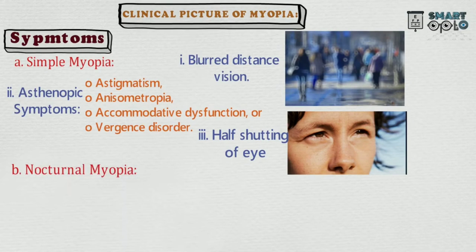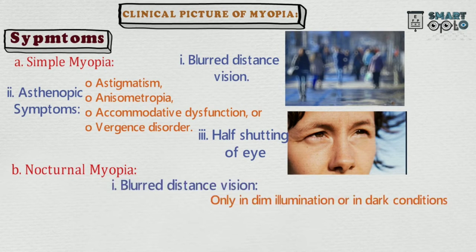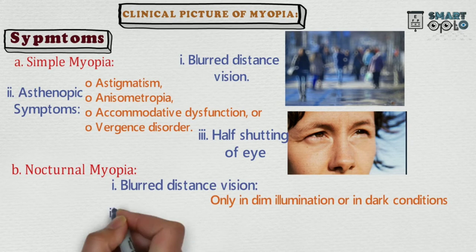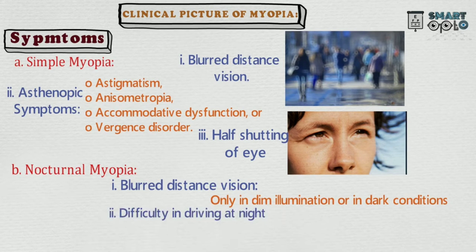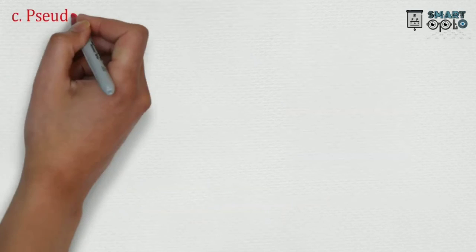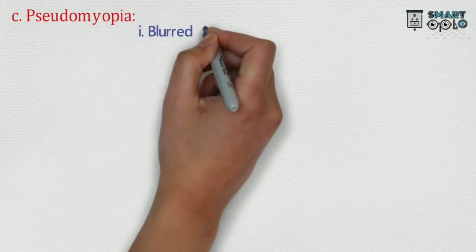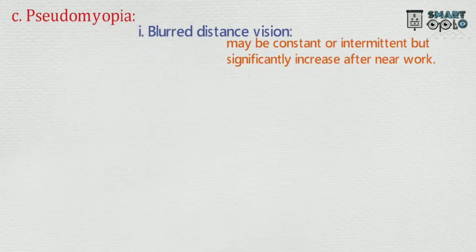B. Nocturnal myopia — symptoms are: 1. Blurred distance vision only in dim illumination or in dark conditions. 2. Difficulty in driving at night. C. Pseudomyopia — symptoms are: 1. Blurred distance vision, may be constant or intermittent, but significantly increased after near work.